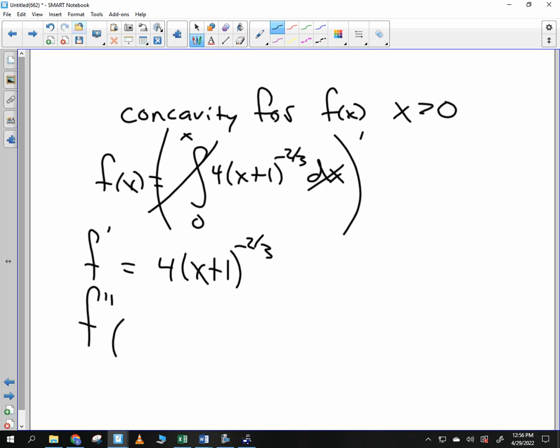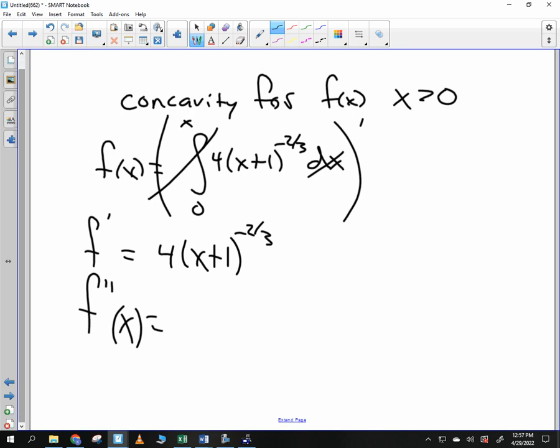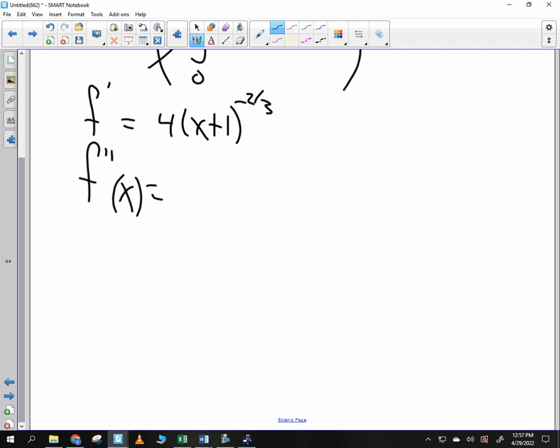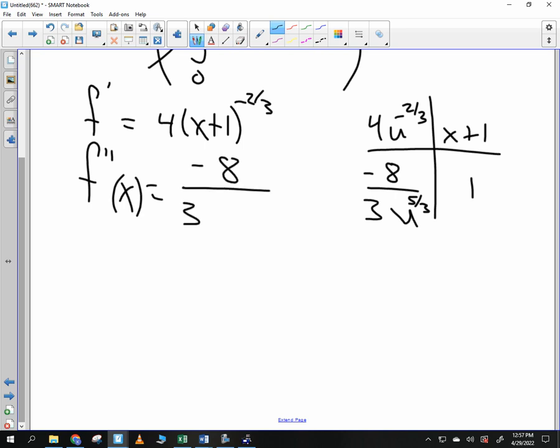So f double prime, I have to take the derivative of that, right? What do you use to take the derivative of that? Chain rule. Good. 4u to the negative two-thirds. And then I have x plus 1. Derivative is 1. And derivative here, I've got negative 8 over 3u to the five-thirds power in the denominator. So f double prime, I've got negative 8 over 3 times x plus 1 to the five-thirds power. That's my derivative. Everybody good with that?